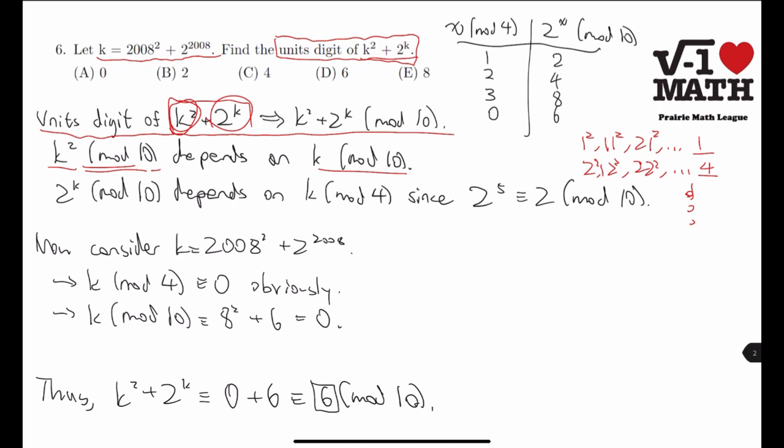Now, on the other hand, 2 to the power of k is a bit, so you have to notice a pattern here. If you take, or just write powers of 2, et cetera. We notice that we have this repeating pattern that goes 2, 4, 8, 6, 2, 4, 8, 6, 2, and so on.